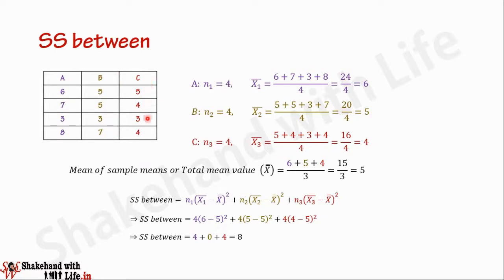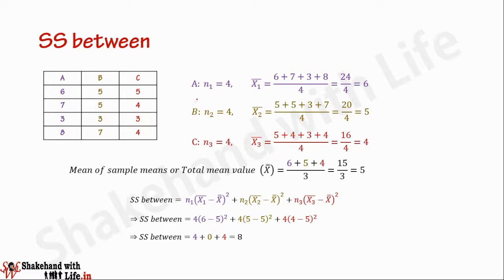We calculate first the mean for sample A. Sample A has four data points, so the sample size for A is 4. Therefore the mean of sample A, which is x1 bar, equals 6 plus 7 plus 3 plus 8 divided by 4, giving us 24 divided by 4, so x1 bar equals 6.